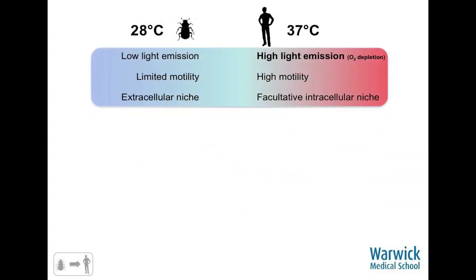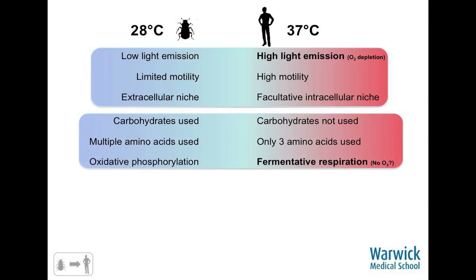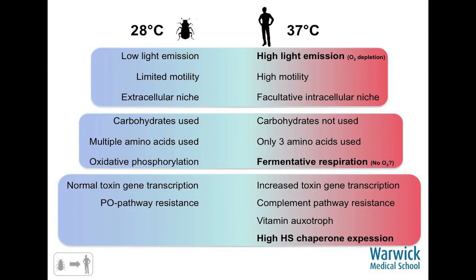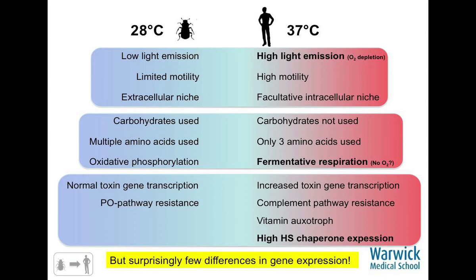To summarise: at 28 degrees we get low light emission, limited motility, and the bacterium stays extracellular. At 37 degrees in a human, we get high light emission — which burns up all the oxygen as it's a very oxygen-hungry reaction — high motility, and it becomes intracellular. Carbohydrate use is lost, multiple amino acid use reduces to just three, and it switches from oxidative phosphorylation to fermentative respiration, probably because the light reaction consumes all available oxygen. It increases toxin gene expression — using the same toxins that work against insects, just making more of them — and all the chaperones come on strongly, suggesting it's having problems folding its proteins. That's why I think it's failing rather than being deliberately evolved this way. Same tools, different job.